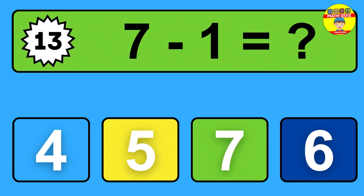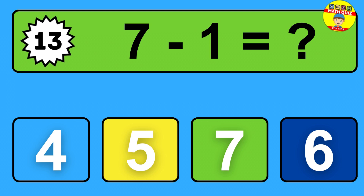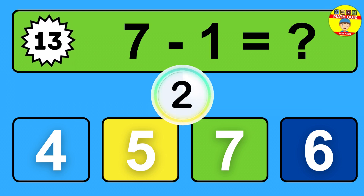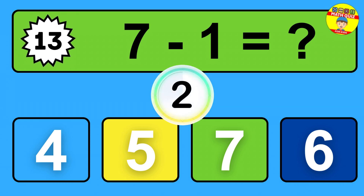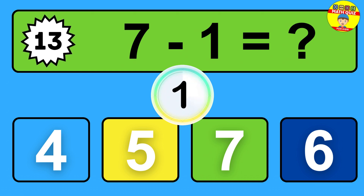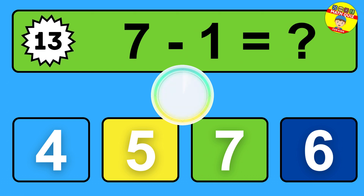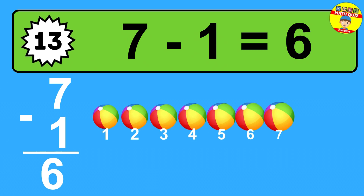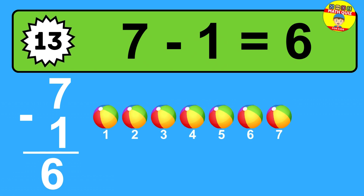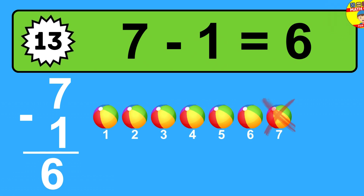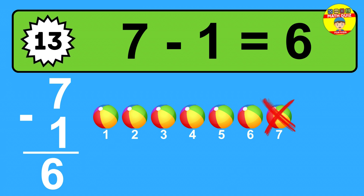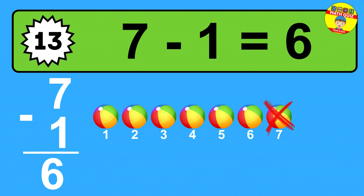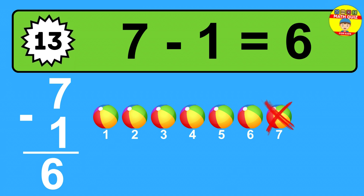Question thirteen: seven minus one equals what? The answer is seven minus one is six. Let's count it: one, two, three, four, five, six.